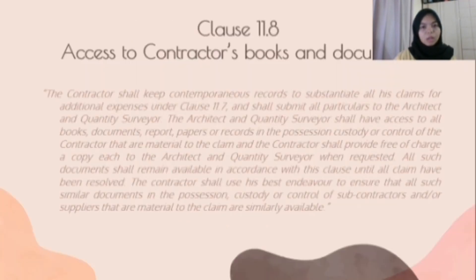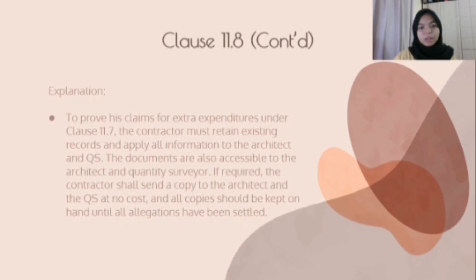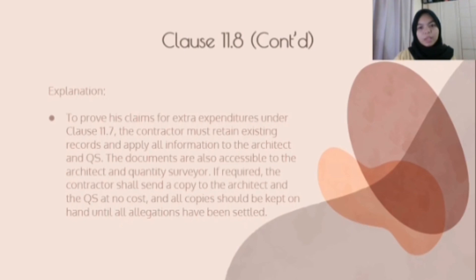Clause 11.8A - Access to Contractor's Books and Documents. To prove his claim for extra expenditure under Clause 11.7, the contractor must retain existing records and provide all information to the Architect and QS. The requirements are also accessible to the Architect and QS. If required, the contractor should send a copy to the Architect and QS free of charge, and all copies should be kept on hand until all claims have been settled.